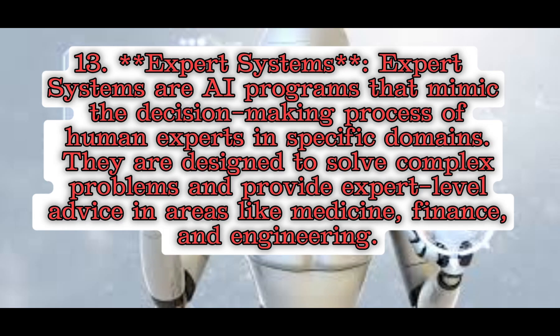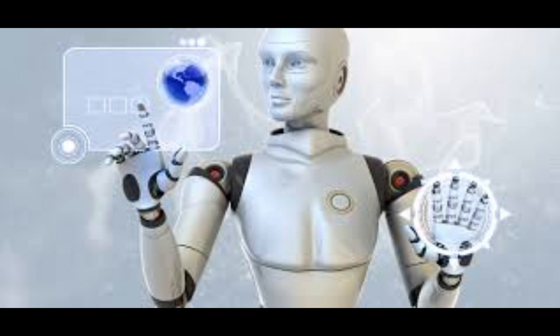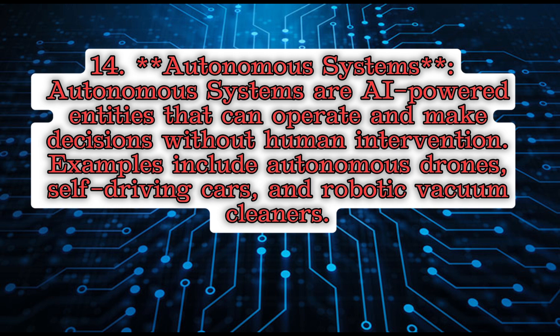13. Expert Systems: Expert systems are AI programs that mimic the decision-making process of human experts in specific domains. They are designed to solve complex problems and provide expert-level advice in areas like medicine, finance, and engineering. 14. Autonomous Systems: Autonomous systems are AI-powered entities that can operate and make decisions without human intervention. Examples include autonomous drones, self-driving cars, and robotic vacuum cleaners.